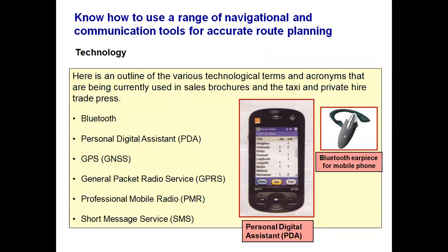The PDA is a personal digital assistant — it can be a standalone unit issued by your dispatch office or an app on your smartphone. GPS stands for Global Positioning Satellites, formerly known as GNSS — Global Navigational Satellite Systems. GPRS, General Packet Radio Service, is a backup system for GPS particularly in rural areas with poor signal. PMR — Professional Mobile Radio — is a two-way radio in the car to speak to the dispatch office, now being phased out. SMS is texting.